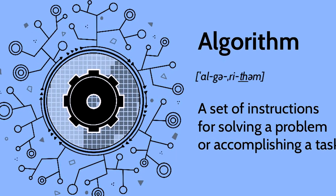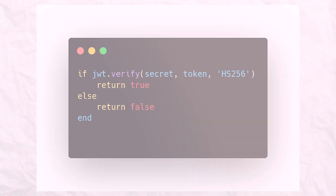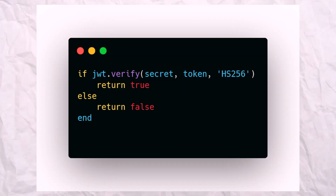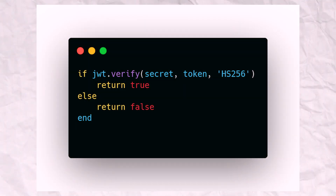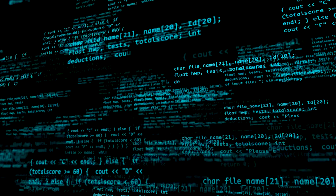Recommendation number four: force the algorithm used. It's an easy tweak and you will be able to kill two attacks — the none-algorithm and algorithm confusion attacks — in just a few characters. Your code will now look something like this: if jwt.verify(secret, token, algorithm) you return true, otherwise you return false.